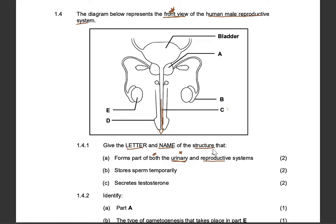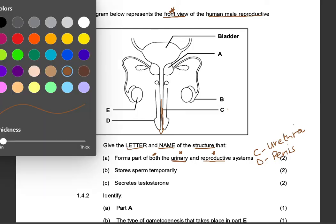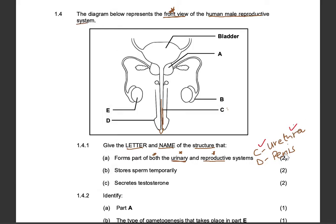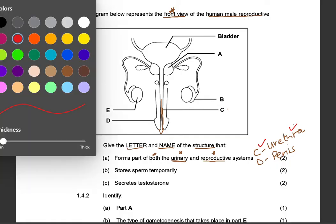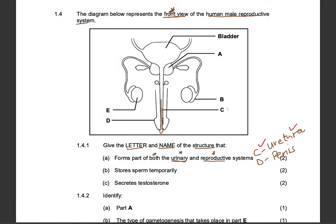In the memo they also accepted D, which is the penis, because the urethra is found inside the penis. The most obvious answer is C for urethra, but D for penis was also accepted. Note that marks are awarded independently: a mark for the letter and a mark for the name — so C with urethra, or D with penis.